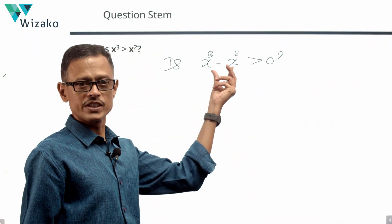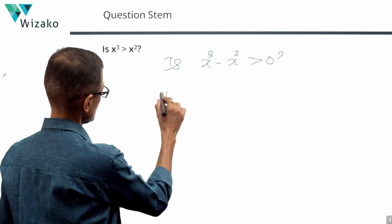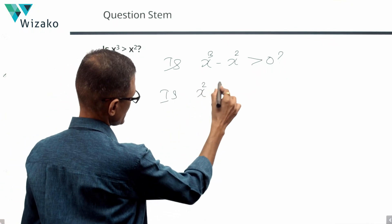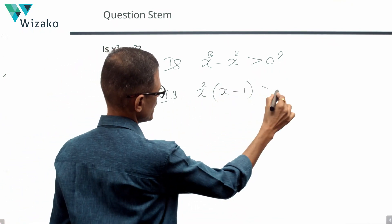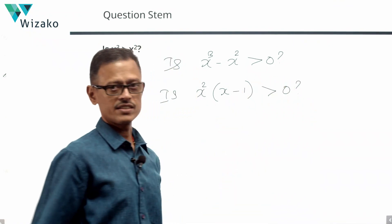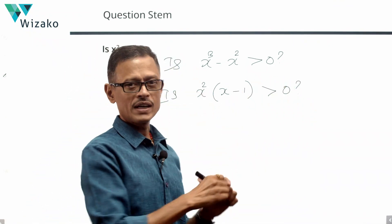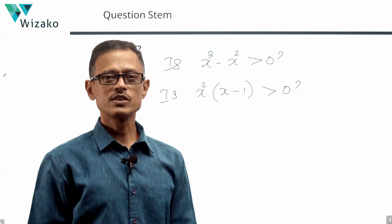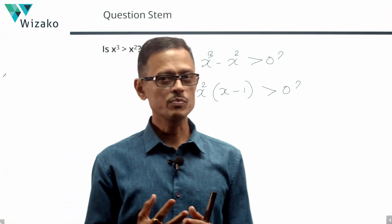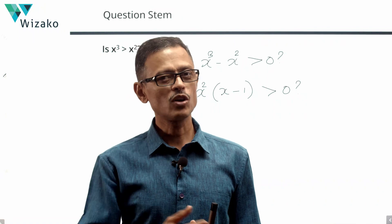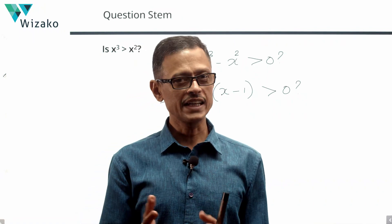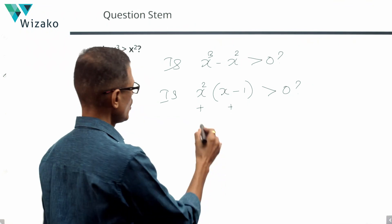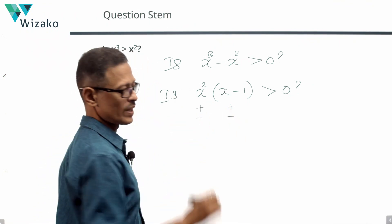X squared is a term common to both parts, so let's factor it out: Is X squared times (X minus 1) greater than 0? X squared is one number, X minus 1 is a second number. The product of these two numbers is positive when both numbers are positive, or both numbers are negative. So it could be that X squared is positive and X minus 1 is positive, or X squared is negative and X minus 1 is negative.